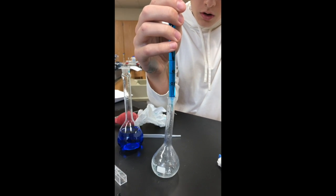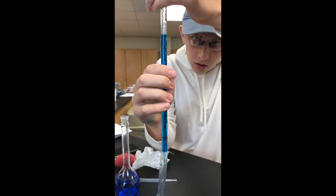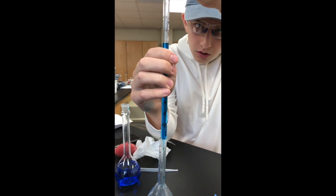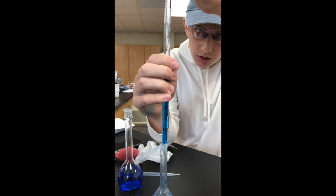Now that the meniscus is at zero, Garrett can accurately and precisely measure out 3.7 milliliters into the 50 milliliter volumetric flask.